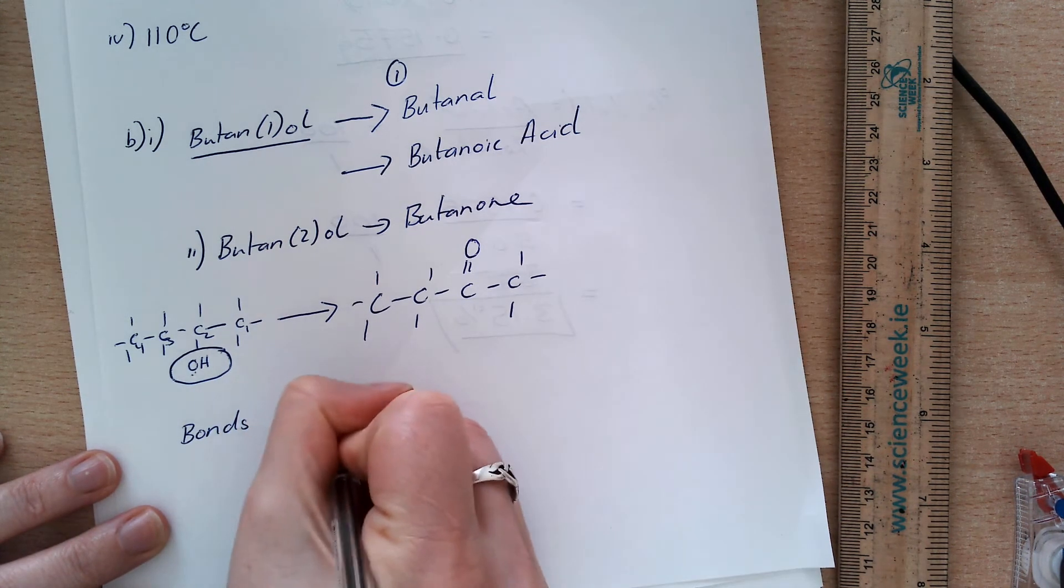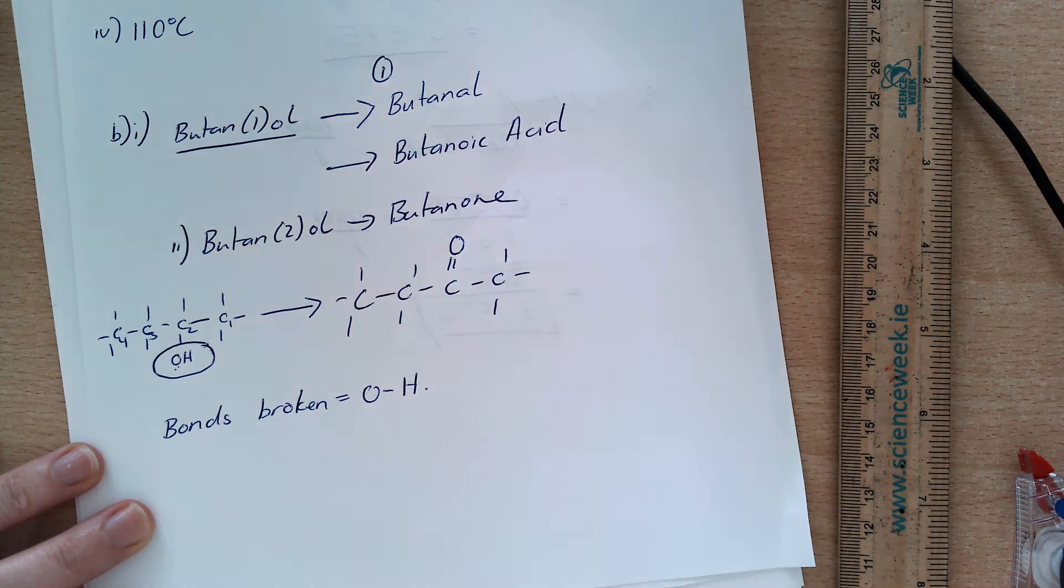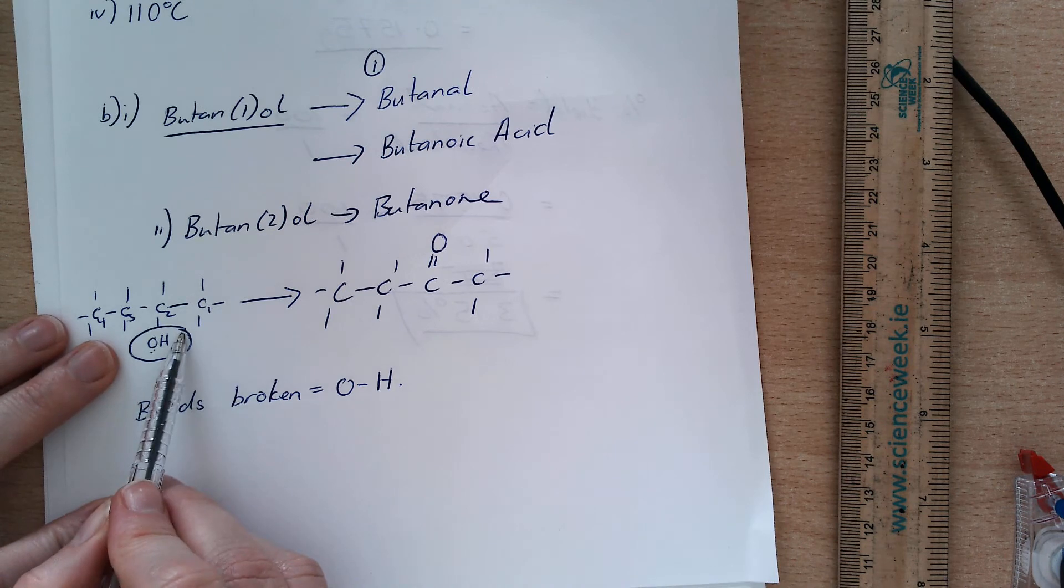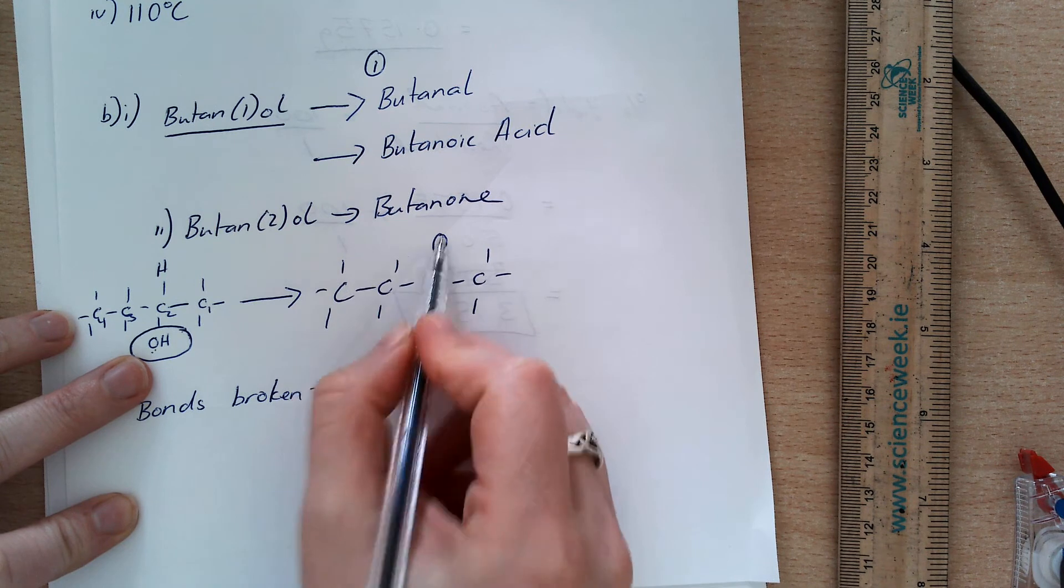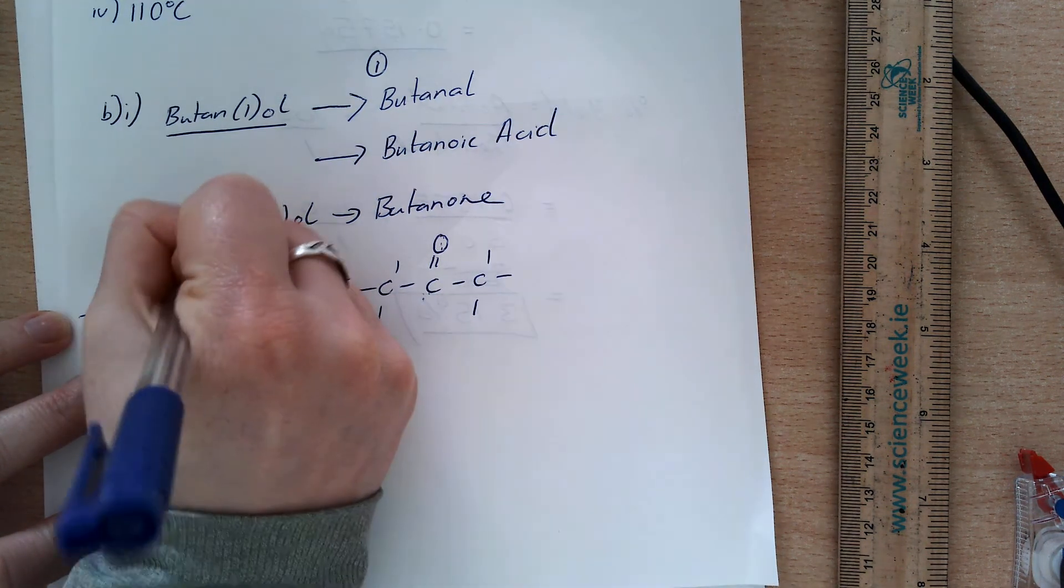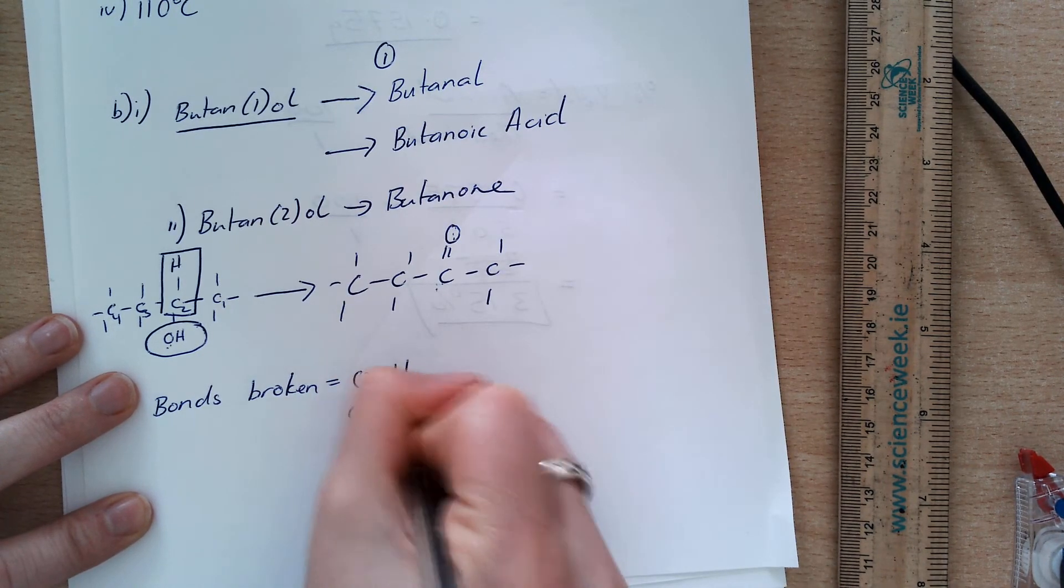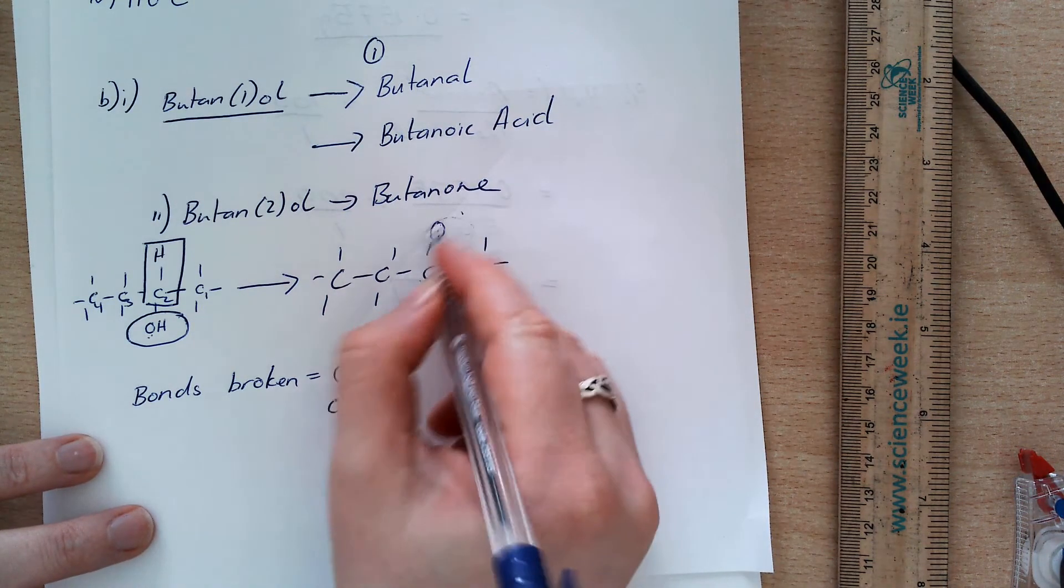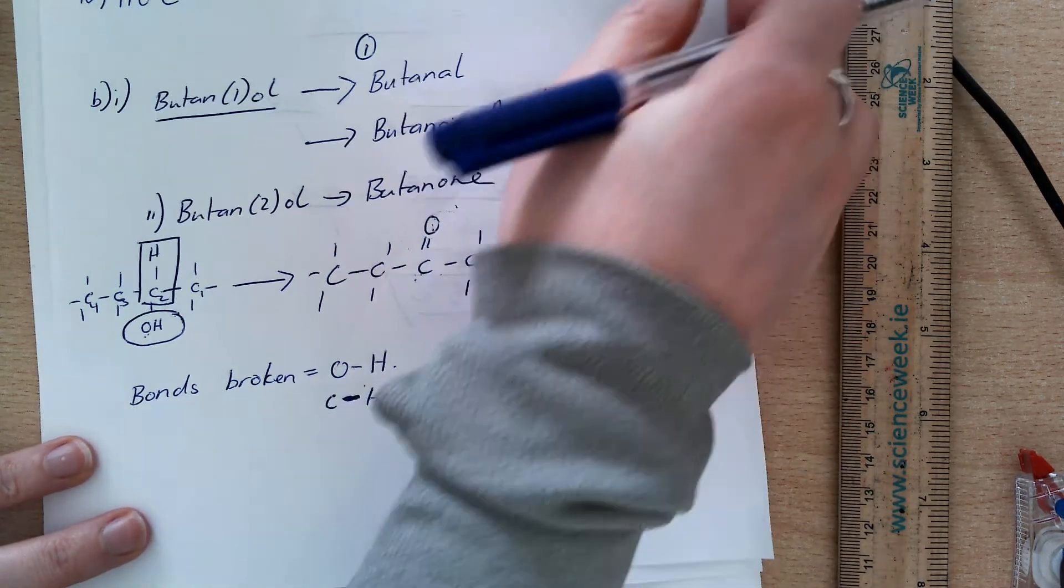So, the first bond that's broken is O to H. The second bond then that's broken, if I look at here, this is a C to H, but I don't have a CH here anymore. So, this is the second bond that's broken: CH. If you're asked for the bond then that's formed, this is the only one here that's formed that's different. All the rest are the same.